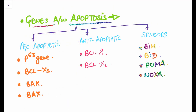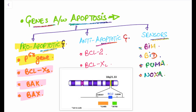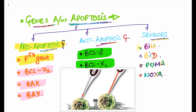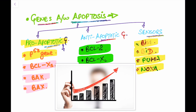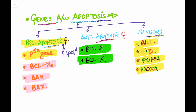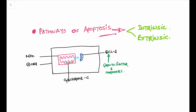We have some genes associated with apoptosis: pro-apoptotic genes, anti-apoptotic genes, and some sensors. Pro-apoptotic genes include p53, BCL-excess, BAX and BAK genes. Anti-apoptotic genes include BCL-2 and BCL-XL. Sensors include BIM, BID, PUMA, and NOXA. Pro-apoptotic genes increase the apoptotic process, while anti-apoptotic genes decrease it.